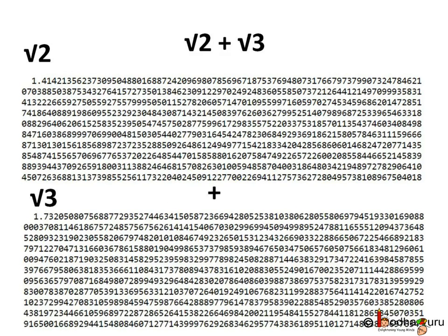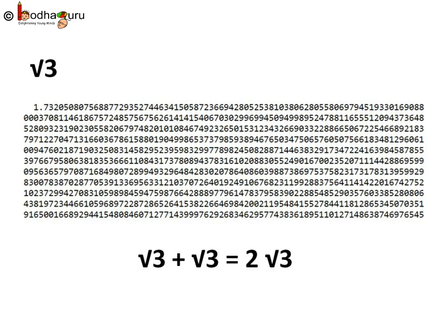Let us take some examples. Square root of 2 plus square root of 3 — both are irrational numbers, both are non-terminating and non-recurring decimals. If we try to add them, the addition would go on and on, so we cannot simplify it further. But if it is square root of 3 plus square root of 3, we can say it's 2 times square root of 3, which is 2√3 — but that is also an irrational number.